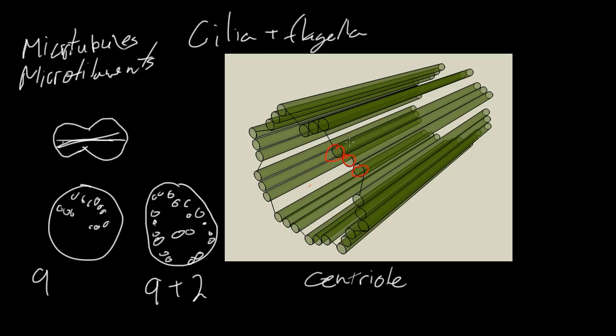There you go. But essentially, what's more important to realize is just get straight what a microtubule is. It's a tube versus a microfilament, which are filaments or fibers. These make up the structure of the cell. Microtubules make up either cilia or flagella, or the centrioles, which proceed in cytokinesis. There we go.